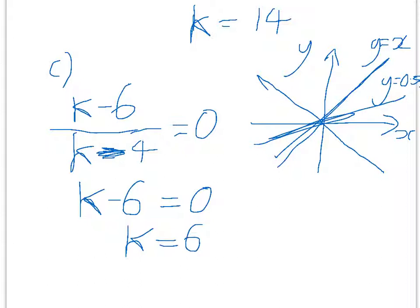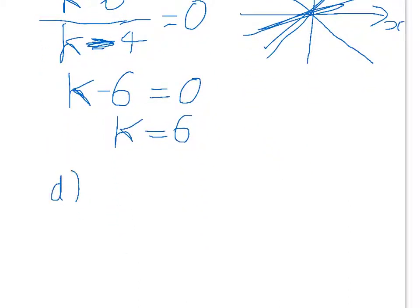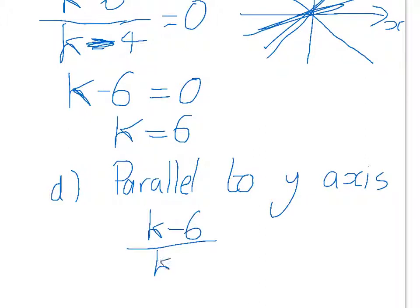And the only time it's ever going to be exactly parallel to that is when the x value is infinity. So, an infinite number. That means the only way this can happen, I'm just going to do this as an extra part to this question. So, D. The gradient is parallel to the y-axis.